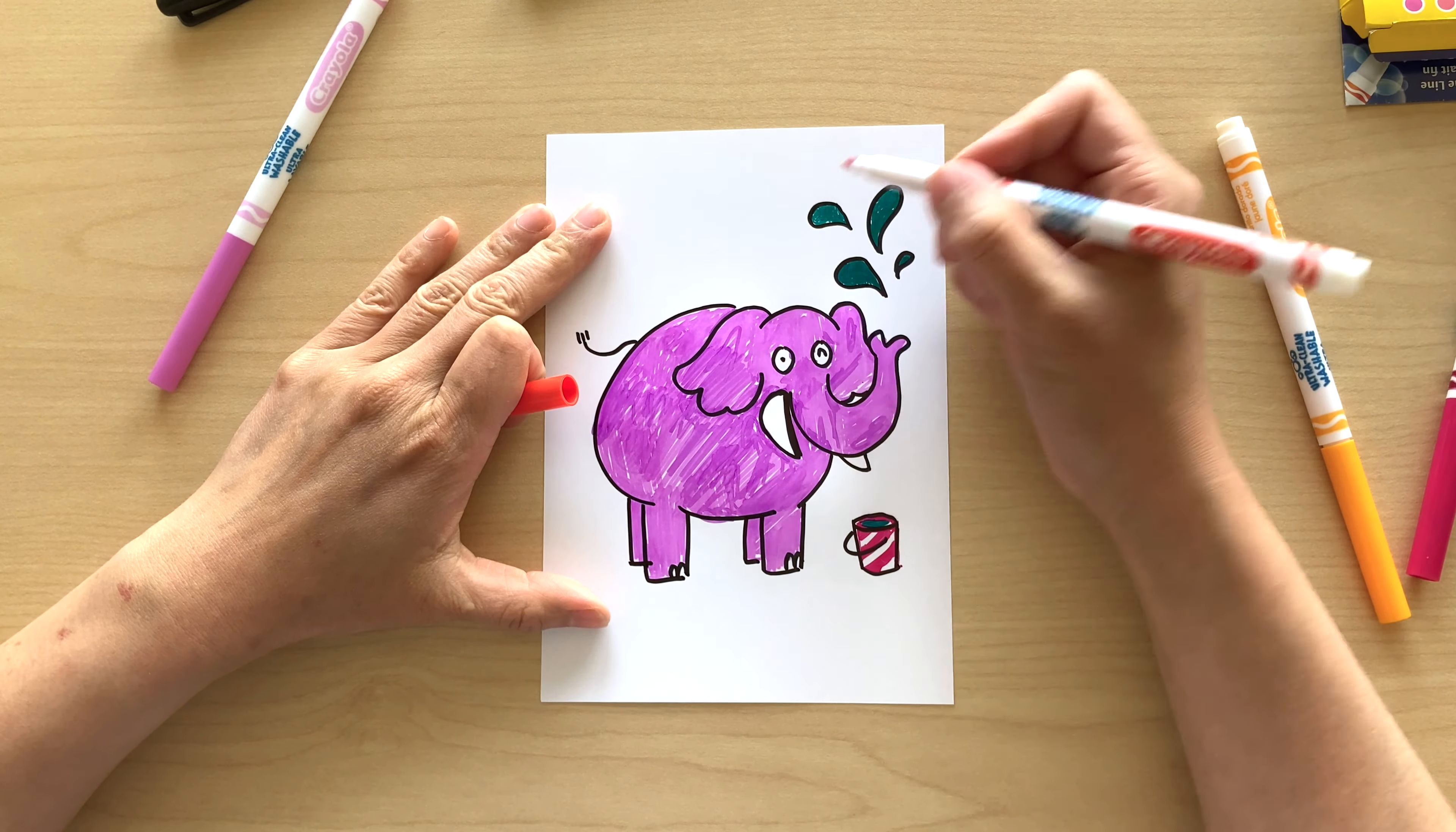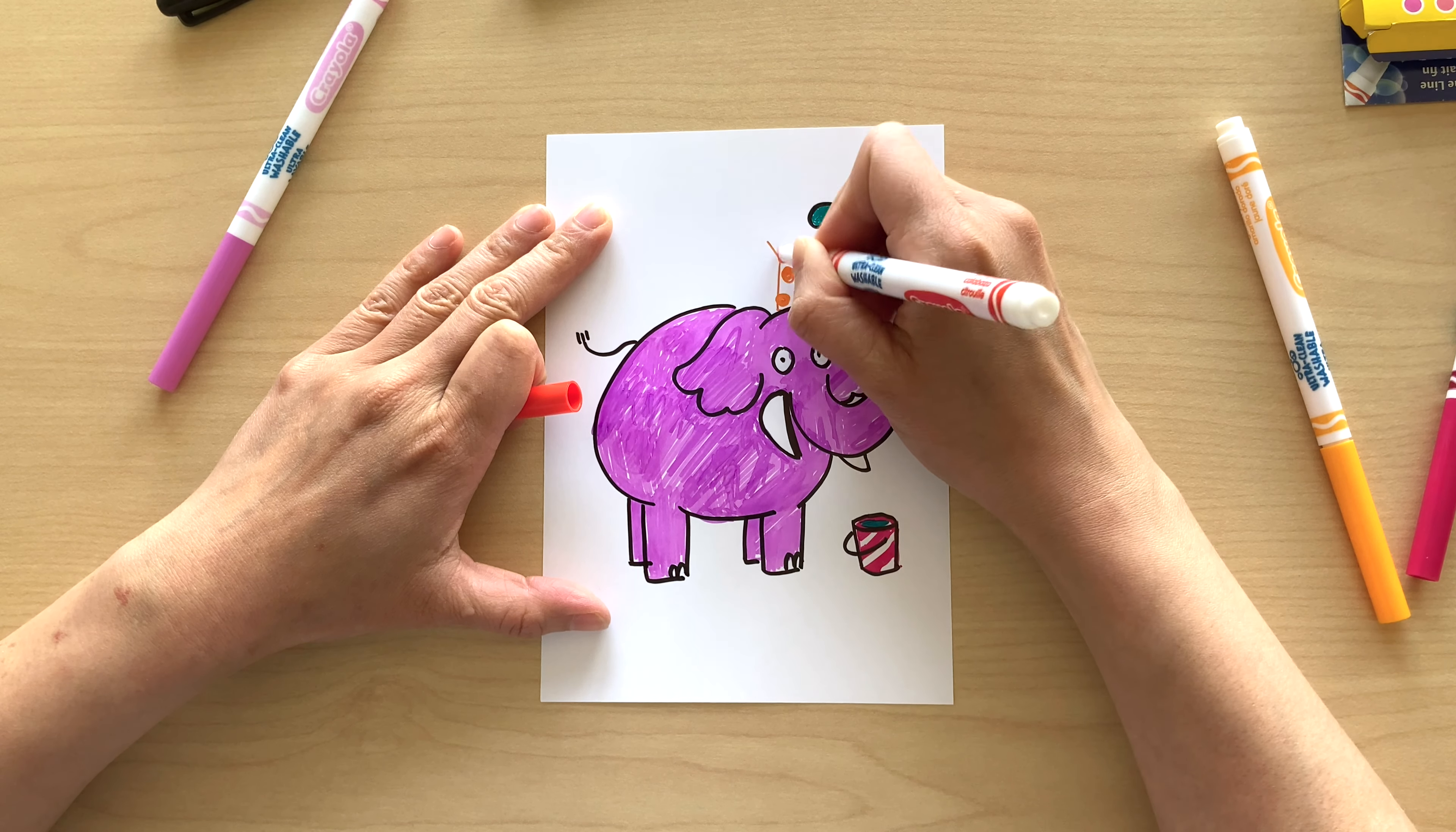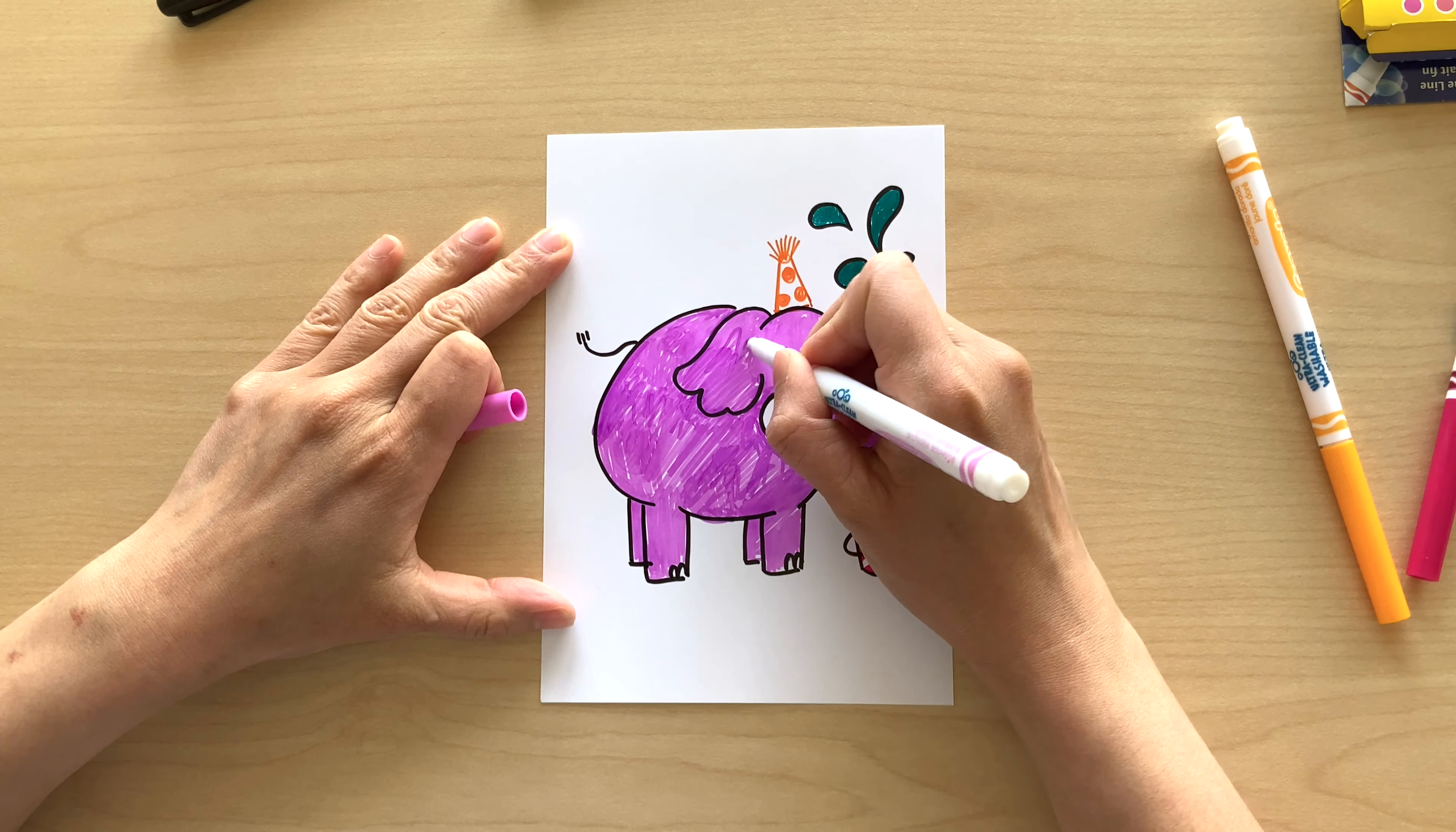I think to wrap up, I'm just gonna add a tiny accessory for my elephant, like a hat. Because I think my elephant is having such a good time playing with water, he has to have a party hat. So I'm gonna do a polka dotted party hat on top for him. And I think that really nicely sums up the drawing.